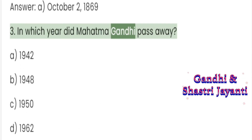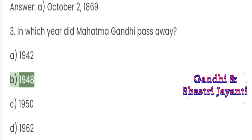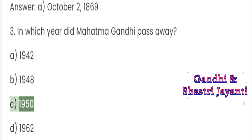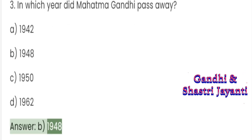Question 3: In which year did Mahatma Gandhi pass away? A. 1942. B. 1948. C. 1950. D. 1962. Answer: B. 1948.